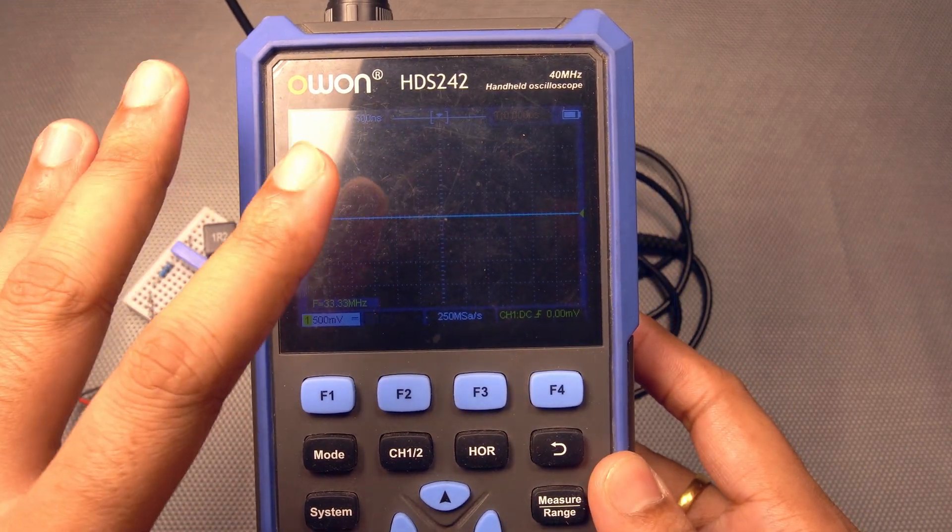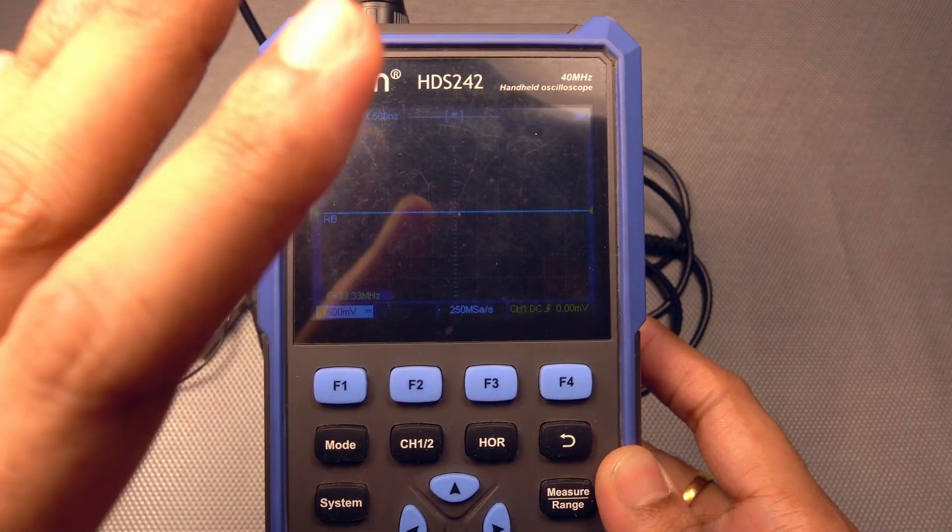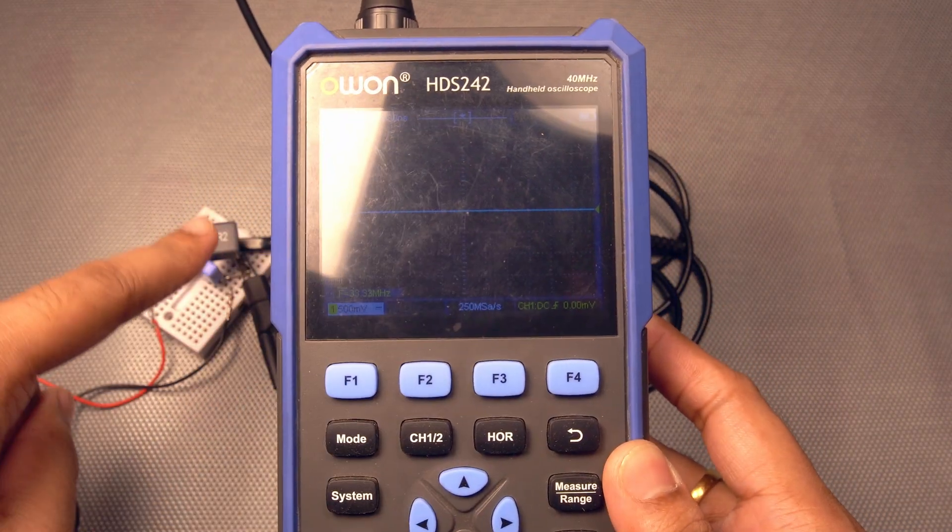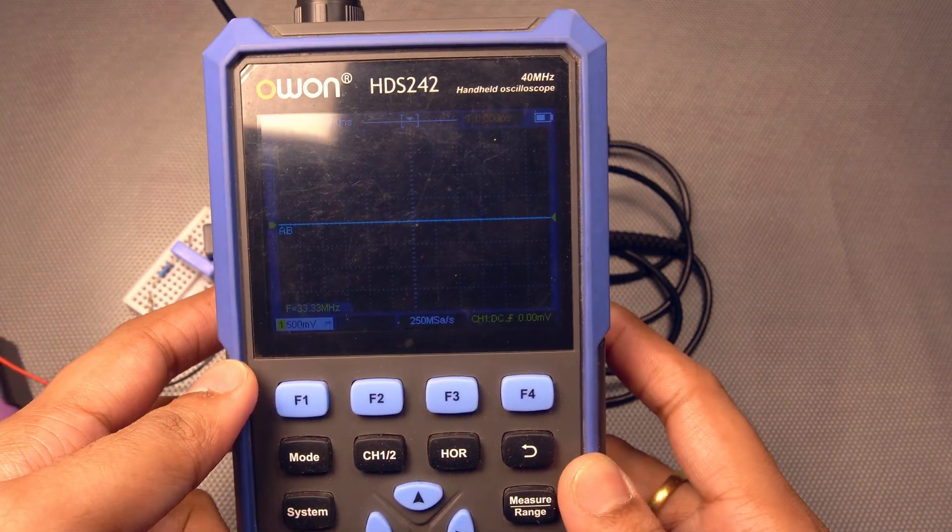Okay, so now let us talk about the settings that we need in our oscilloscope. And this is the most important part in measuring the inductance of these low values.